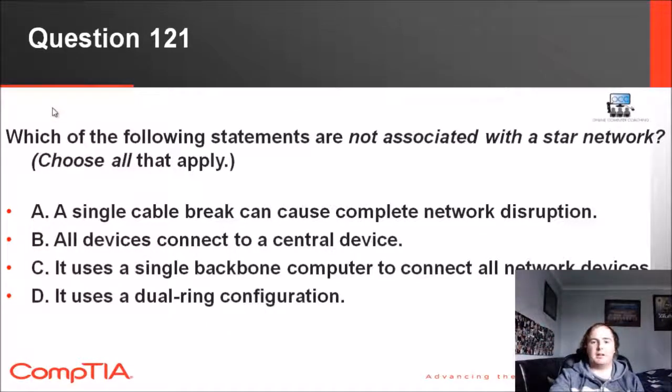First one, which of the following statements are not associated with a star network? A single cable break can cause complete network disruption, all devices connect to a central device, it uses a single backbone computer to connect all network devices, and uses a dual ring configuration. When looking for the answers, we do the inverse—not associated. So we're going to find what is associated. The answer is actually a central device. Star network uses a center, a central device that devices connect to. And it's probably known to be not very single point of failure savvy. So anything that's got single point of failure there, A and C, and doesn't use dual ring configuration—those three, all except B, are correct.